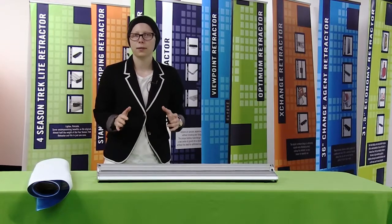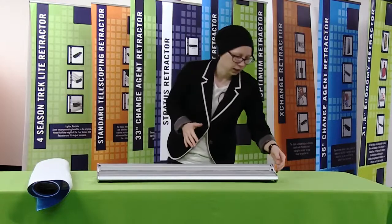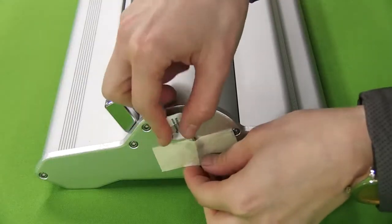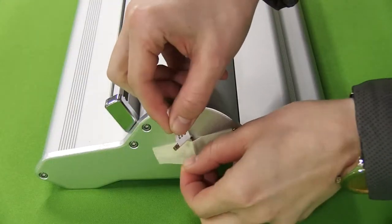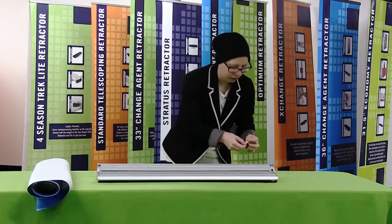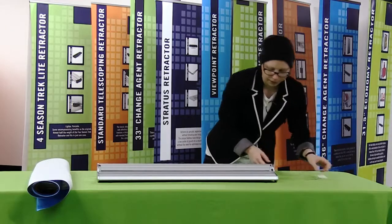The first thing I'm going to do is remove the key from the side of the retractor base and just set it to the side. The key can usually be found on the side or on the bottom.